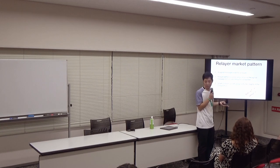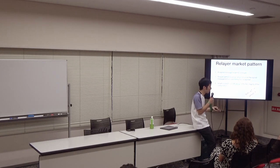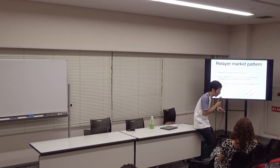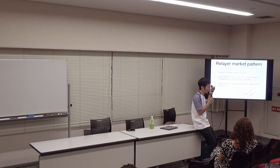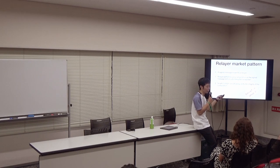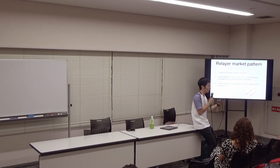This is also why ZK rollups have so much potential - depending on the zero-knowledge proof implementation, the proof can be verified in log n, where n is the number of steps to perform a calculation. This is very relevant for phase 2 of ETH 2, when it starts executing transactions, because beacon nodes have to verify transactions happening on the shard chain, where there are 1,024 shard chains, meaning there has to be some kind of efficiency gain when verifying transactions.